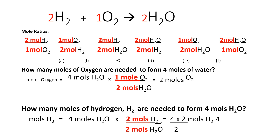Consider this equation: 2H₂ plus O₂ forms 2H₂O. The mole ratios are: moles of H₂ over moles of O₂ (coefficients 2 and 1), moles of O₂ over moles of H₂ (coefficients 1 and 2), moles of H₂O over moles of H₂ (coefficients 2 and 2), and moles of H₂ over moles of H₂O — and so on.